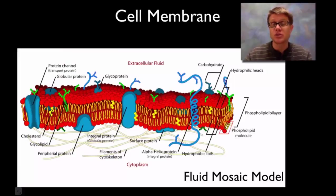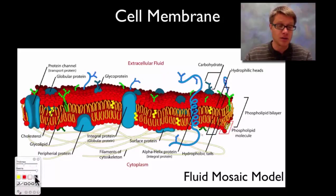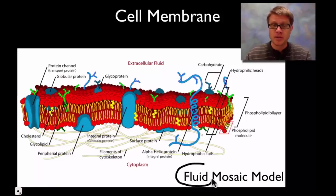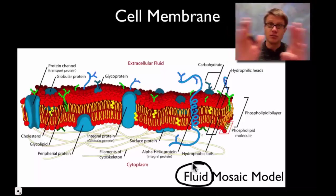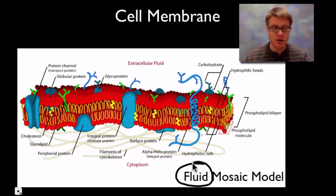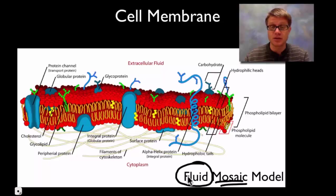Now the model we use to explain how a cell membrane works is the fluid mosaic model. If we break down this term: it's fluid, and that means that all the material inside the membrane is actually moving around. And if it ever stops moving, then it doesn't function as a membrane. The other thing is that it is a mosaic — it's made up of a lot of different things.